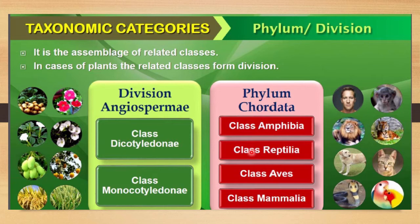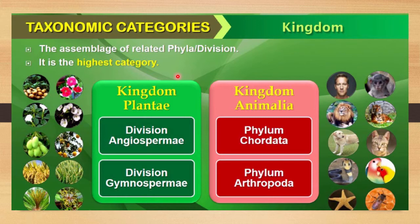Phylum Chordata includes many classes: class Amphibia, class Reptilia, class Aves, and class Mammalia. You will learn these classes in detail in chapter four. So phylum Chordata includes four classes — Amphibia, Reptilia, Aves, and Mammalia.